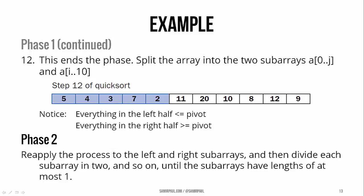So now for the next phase, we're just going to do the same thing to the left and right subarrays. And then we'll divide each of those into two subarrays, and so on, until the subarrays have length 1 at most. And that's how quicksort goes.